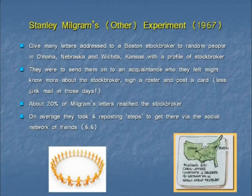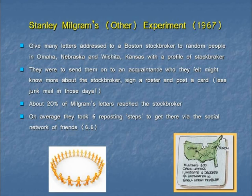His other experiment, also beautifully conceived, was he wanted to get a feeling for the connectivity of society in the USA. He had the idea of creating lots of letters which would be rather incompletely addressed — really to a stockbroker in Boston. You would have a name and the city, maybe a company name like such-and-such stockbroking. He decided to put all these letters into the mail system, give them to people at random in a part of the country which socially was at the opposite pole to Boston — Omaha, Nebraska. He distributed about 400 letters at a time and wanted to see what happened to them.